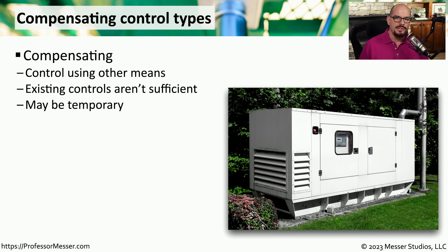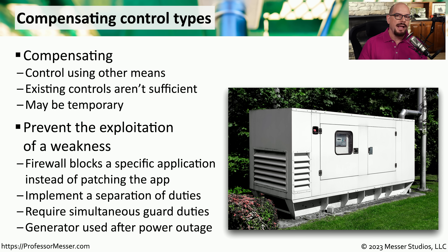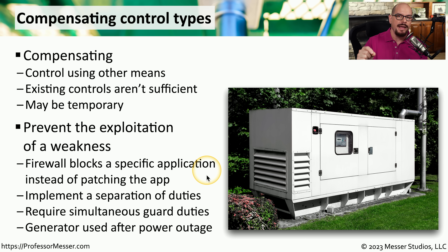You might also find yourself in a situation where a security event has occurred, but you don't have the resources or means to reverse what that event has caused. In those cases, you may want to use a compensating control type, which provides you with other means to control that particular security event. This may be something you use on a temporary basis until you're able to put together a plan to resolve the overall security incident. For example, if an application developer has told you they've identified a significant security vulnerability in their software and will provide a patch in the future, you may want to set a firewall rule today to prevent somebody from exploiting that vulnerability.